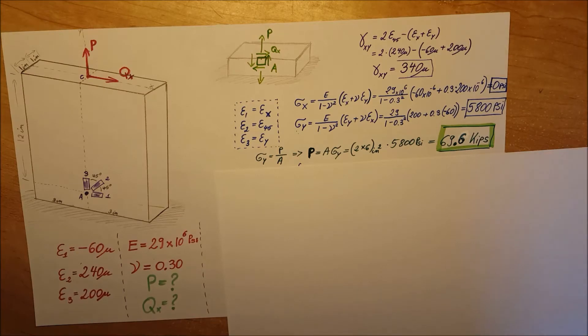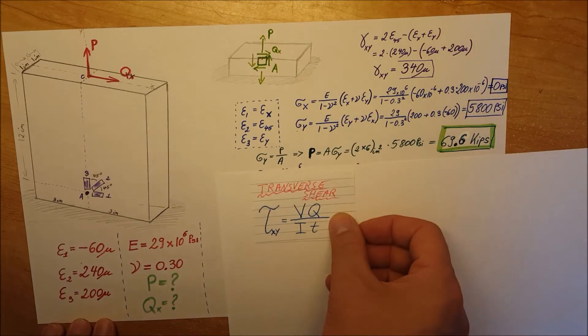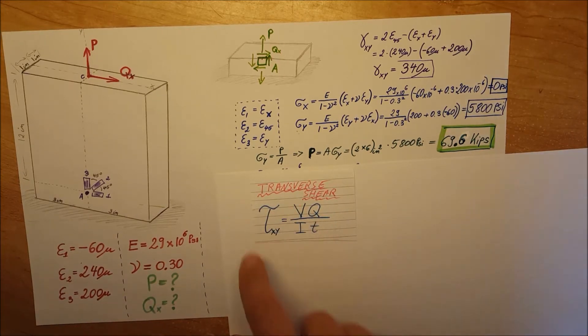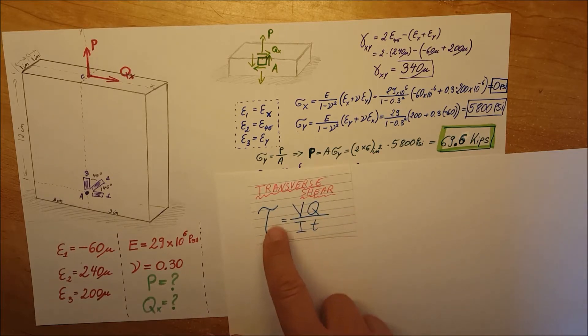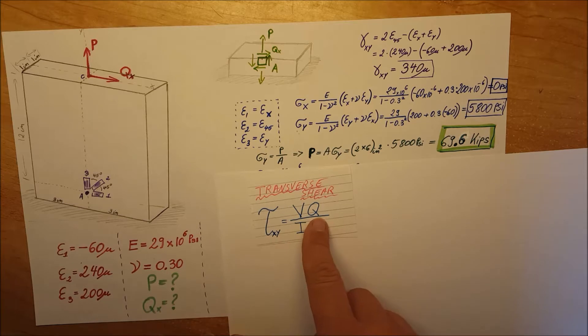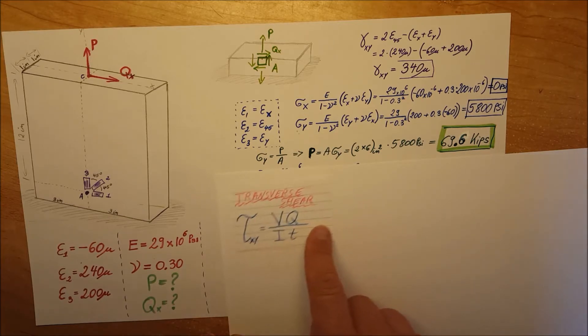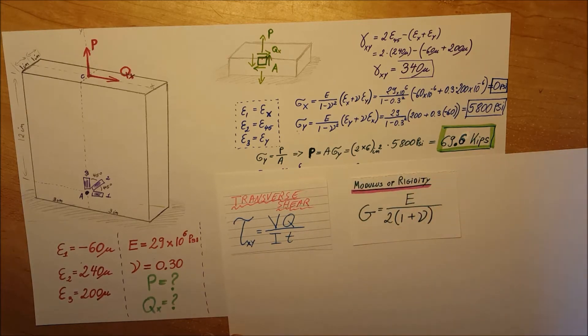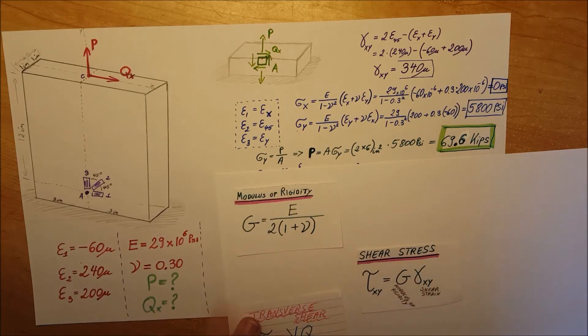Next up, we need to calculate Qx. For this, we're going to use transverse shear. We can see that we have to calculate V, but at this point in this formula we would have two unknowns: V and τ. Before we use this formula, we're going to calculate the modulus of rigidity to find G, and then shear stress will give us τ.